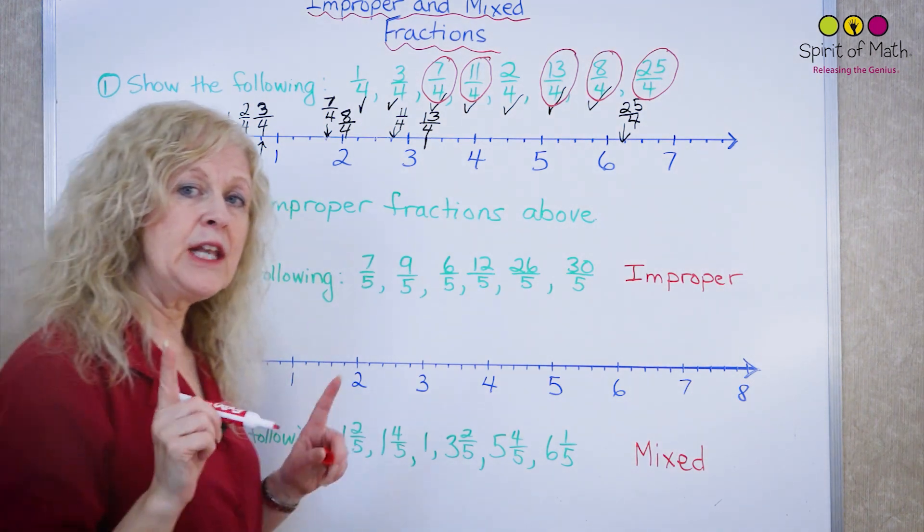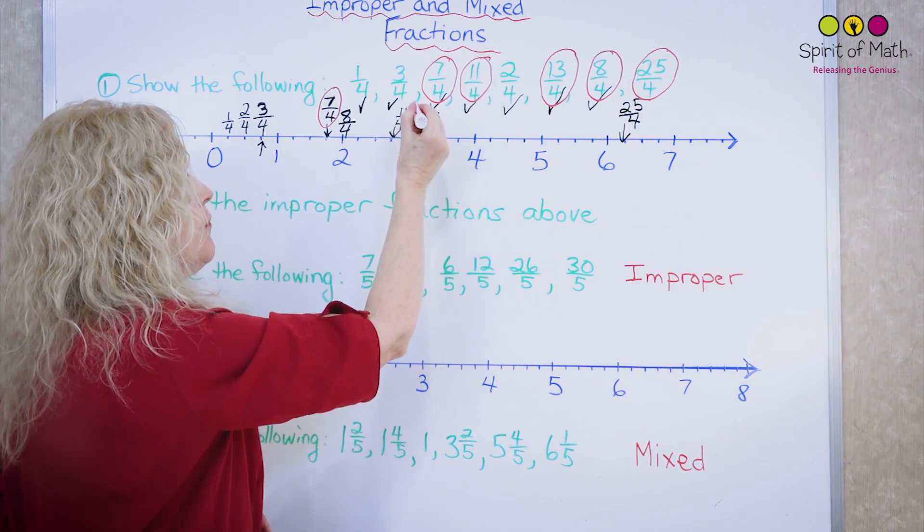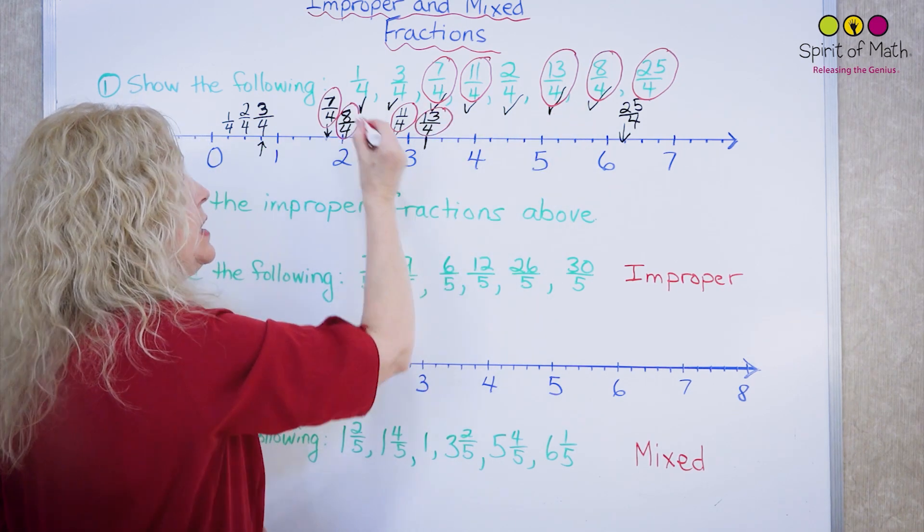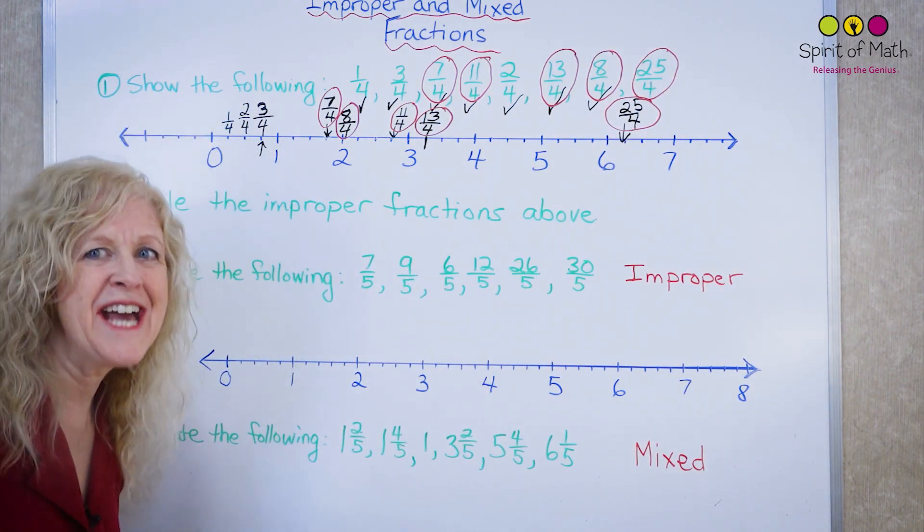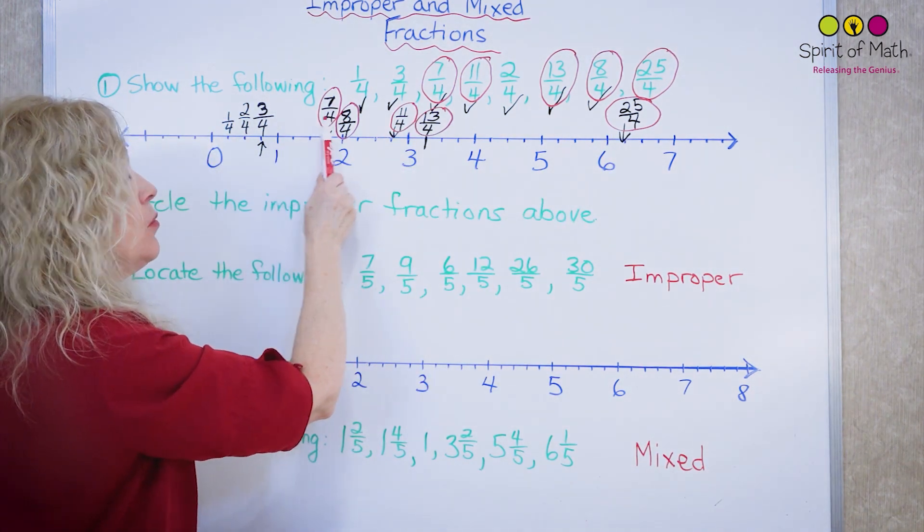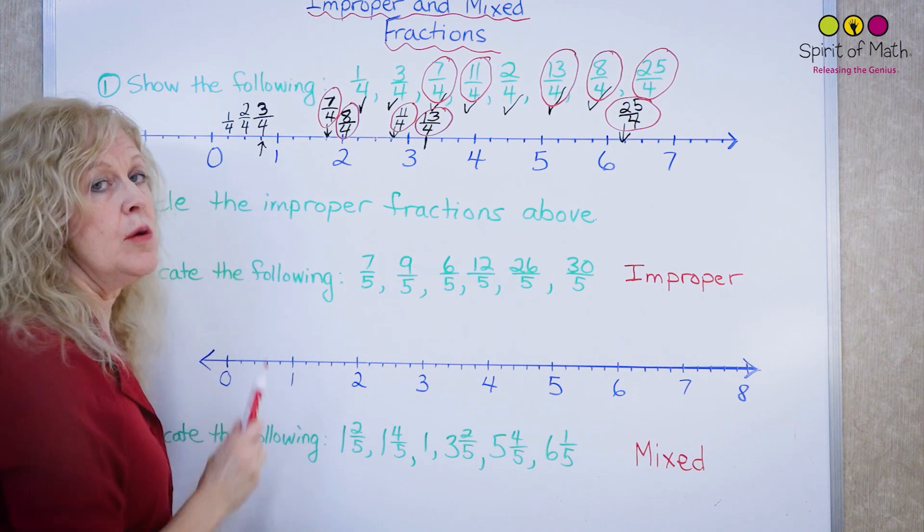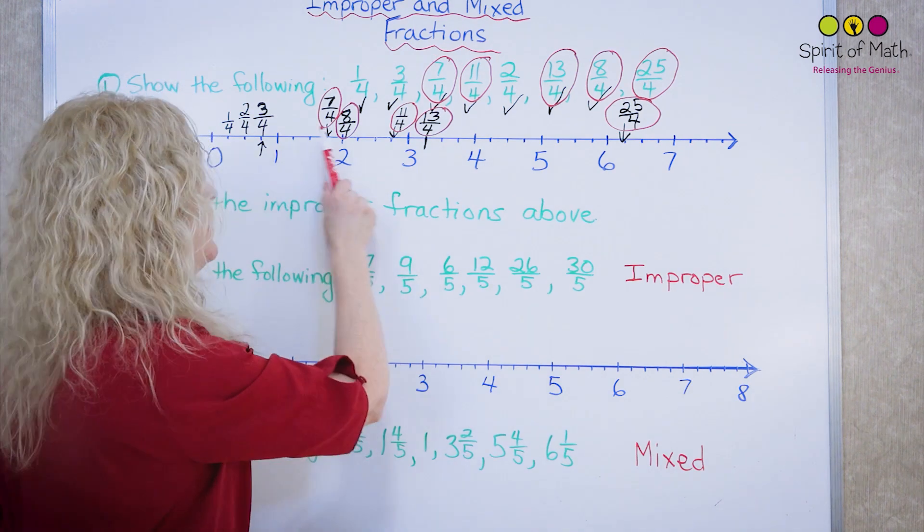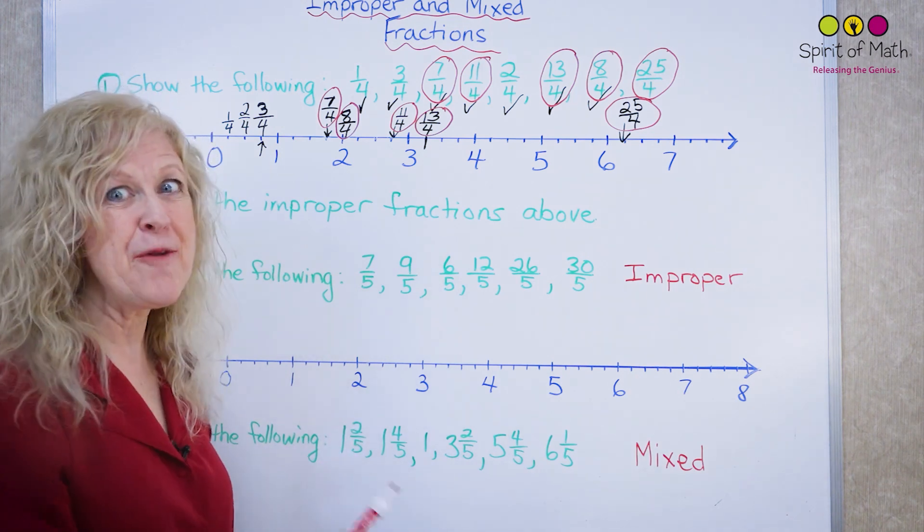Now, let's go back and look at these ones. Seven over four is right here, eleven over four is right here, thirteen over four is right here, eight over four is here and twenty-five over four is here. Look what happened. All of these are improper. They were all above the one and all the numbers underneath the one, between the zero and the one, are proper fractions. The improper ones are bigger than one. We're going to do some more and you're going to see why and what happens now.